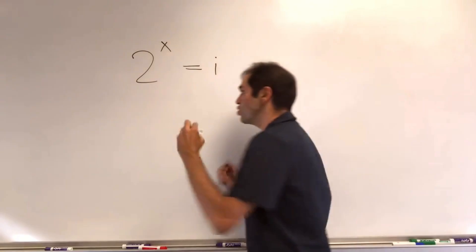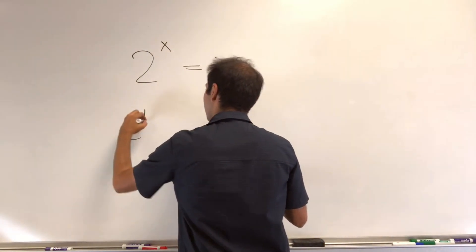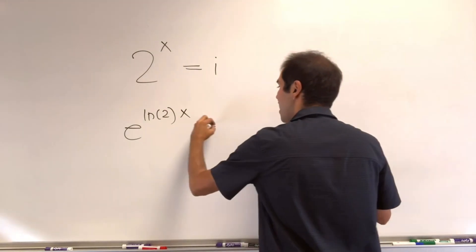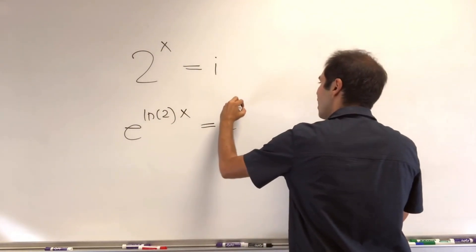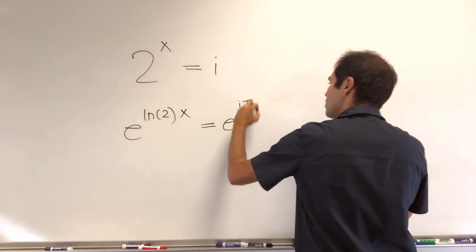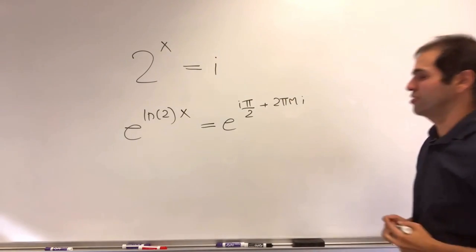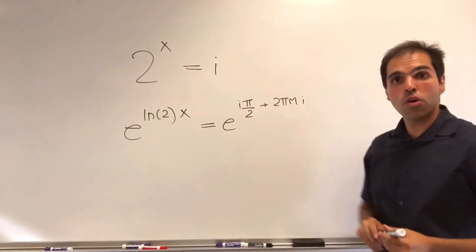Notice 2 is just e of ln of 2. So 2 to the x is e of ln of 2x, and i is e to the i pi over 2 plus 2 pi mi, so just add multiples of 2 pi i, and then just compare exponents.